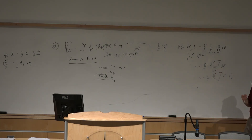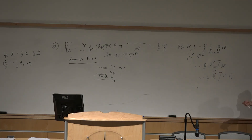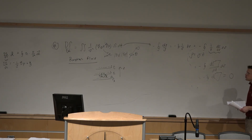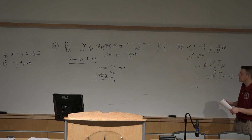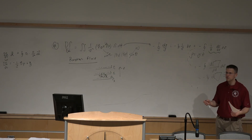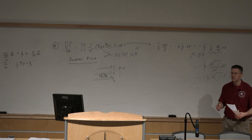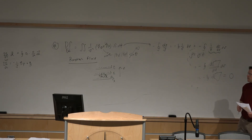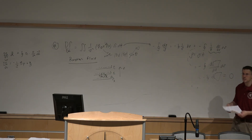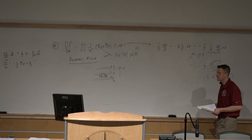Next we'll contrast this with the baroclinic fluid, where density is a function of both pressure and temperature, and we get horizontal gradients in temperature that drive circulations — which we'll discuss next.